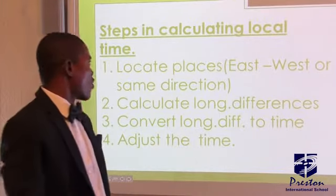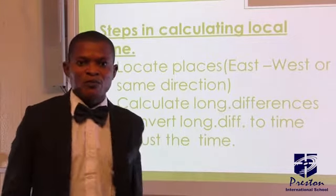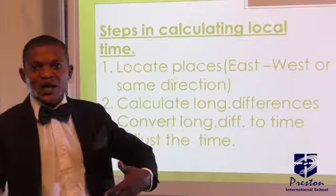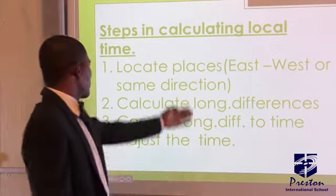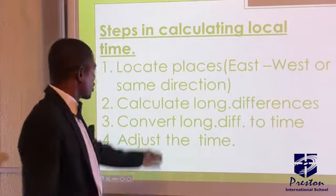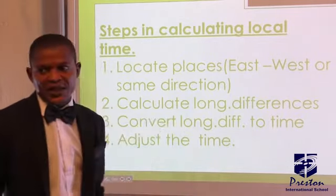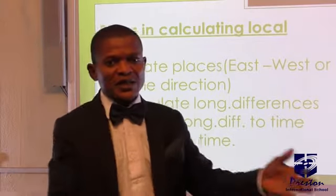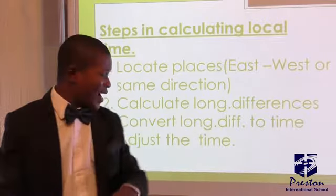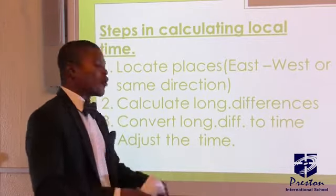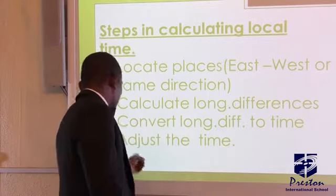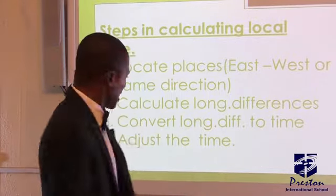Let's look at the steps involved. First, you locate the places involved, whether they are east-east, west-west, or in the same or different direction. Number two, calculate the longitude differences. If they are in the same direction, we subtract. When they are in different direction, we add. Third, we convert the longitude differences to time. The last one, we adjust the time.